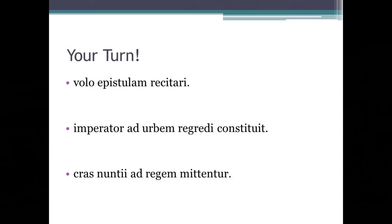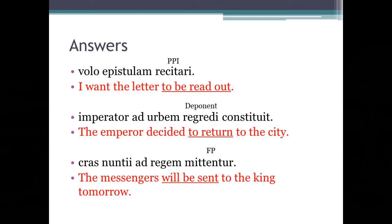Okay, I'd now like you to pause the video and have a go at these. Now let's go through the answers. Volo epistulam recitari — 'I want the letter to be read out.' Imperator ad urbem regredi constituit — 'The emperor decided to return to the city.' Cras nuntii ad regem mittentur — 'The messengers will be sent to the king tomorrow.' If you managed to achieve all three correct, I am really impressed, well done. If you managed two out of three, you haven't quite achieved full marks but I'm sure you will in future. And if you only managed to get one out of three correct, then maybe a little bit more practice is required.